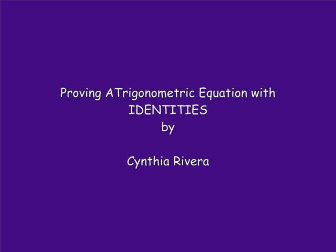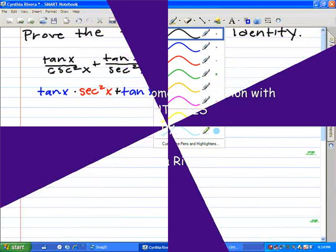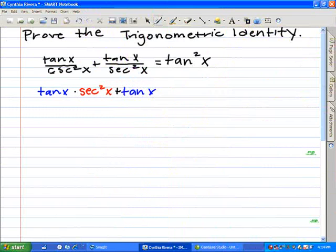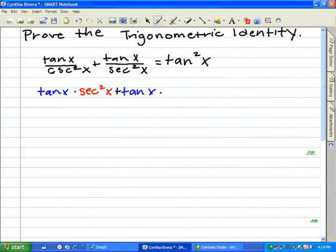Here we have proving a trigonometric equation with identities by Cynthia Rivera. We're told to prove the trigonometric identity: tangent x over cosecant squared x plus tangent x over secant squared x equals tangent squared x.